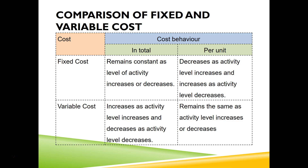To compare fixed and variable cost, there are two ways: in total or per unit. In total, fixed cost remains unchanged or constant while variable cost increases as activity level increases. Per unit, fixed cost decreases as activity level increases, while variable cost remains the same per unit as activity level increases. All of these must be within a relevant range.